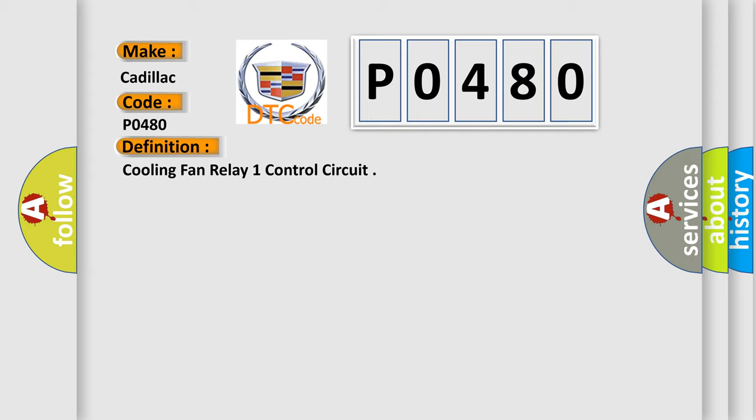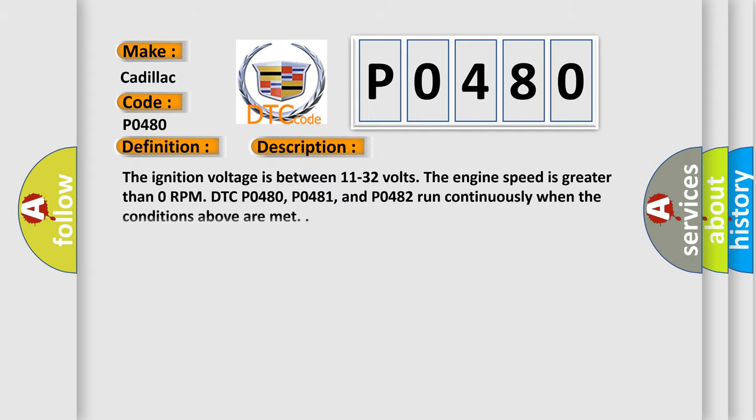And now this is a short description of this DTC code. The ignition voltage is between 11 to 32 volts. The engine speed is greater than zero RPM. DTC P0480, P0481, and P0482 run continuously when the conditions above are met.